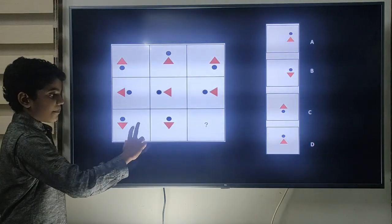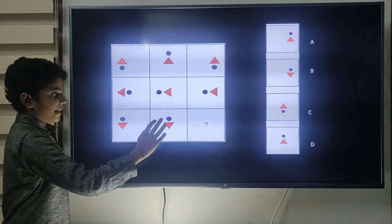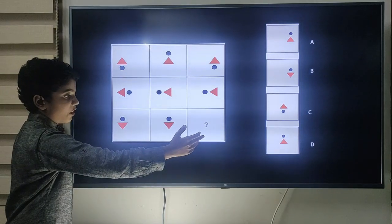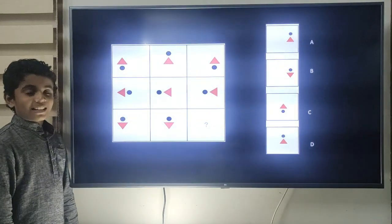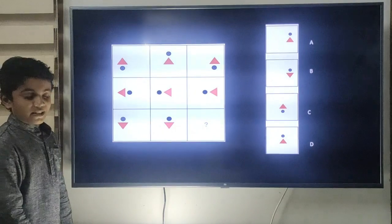In the last row, the first two triangles are pointing downwards, so definitely the third triangle will also point downwards. I hope the answer is clear for you. Yes, the correct answer is B. Let's go to the next question.